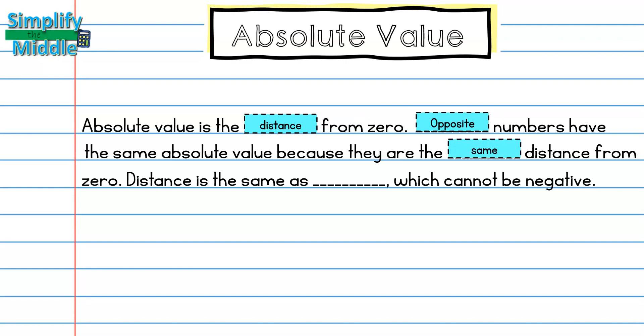We looked at that with our example of negative 5 and positive 5, both having the same absolute value of 5. Distance is the same as length, which cannot be negative.